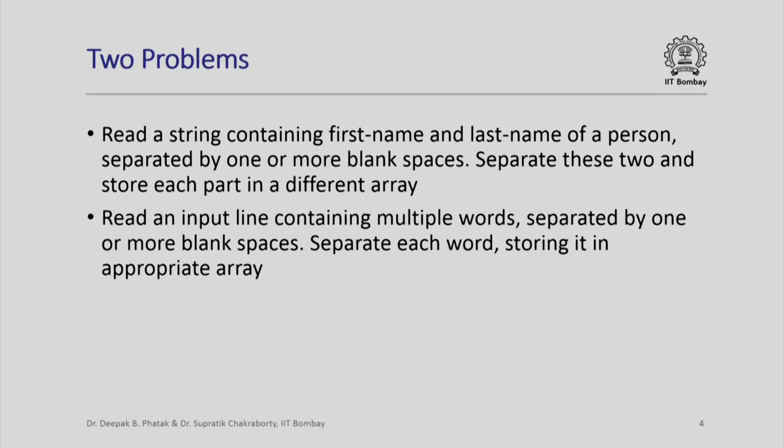We start with the statement of two problems. One, we want to read a string which contains first name and last name of a person, just two names but these could be separated by one or more blank spaces. What we wish to achieve is that we want to separate these two, first name and second name, and store each part in a different array. So there should be one array for storing first name, another array to store the last name.